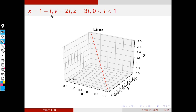This is the plot of the curve x equal to 1 minus t, y equal to 2t, z equal to 3t. When t equals 0, x equals 1, y equals 0, z equals 0, so the starting point is (1, 0, 0). As t increases, x is decreasing and y and z are increasing. When t equals 1, x equals 0, y equals 2, and z equals 3. So the endpoint is (0, 2, 3), and this is a straight line.